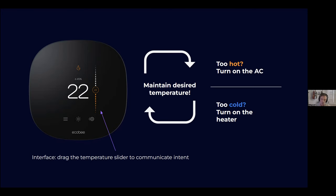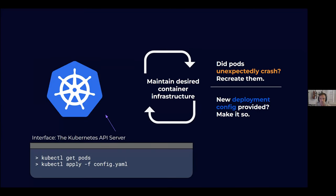As we think about Kubernetes, its job fundamentally is to maintain desired container infrastructure. You define your application as a set of containers — a deployment and other aspects — deploy that, and Kubernetes maintains that desired state. If pods crash unexpectedly, Kubernetes recreates them. The interface to Kubernetes is fundamentally the API server, and kubectl is a command-line tool that makes calls to your API server's endpoint. So Kubernetes is a control plane for container infrastructure.